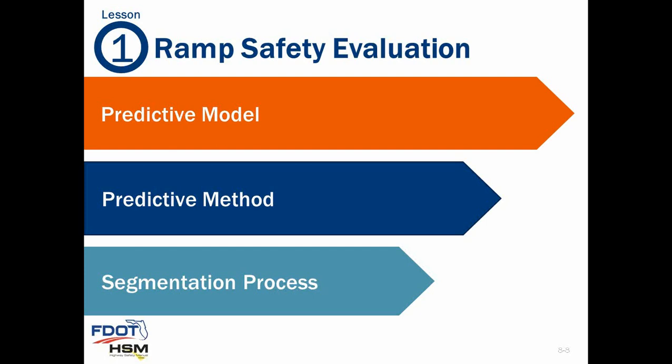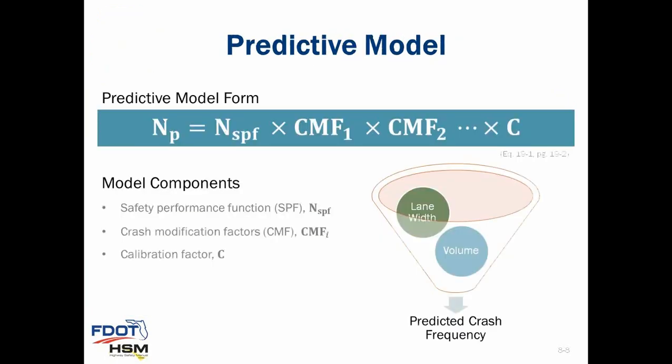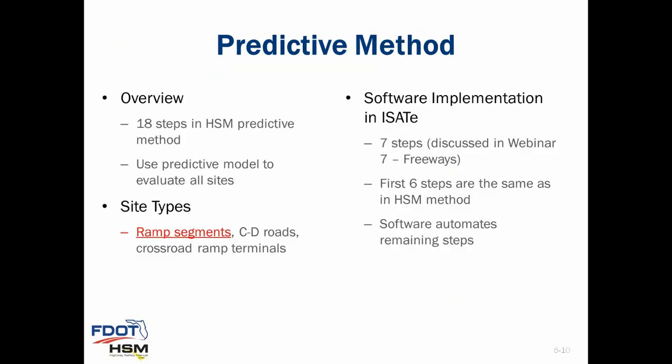Lesson one has three topics: the predictive model, the predictive method, and the segmentation process. A predictive model includes a safety performance function, multiple crash modification factors, and a local calibration factor. These components are multiplied together to estimate the predicted average crash frequency for a particular site of interest. The HSM tells us that a predictive method consists of a set of predictive models and guidance for using these models — an 18-step process used to evaluate the safety of a site, a group of sites, or an entire roadway facility.